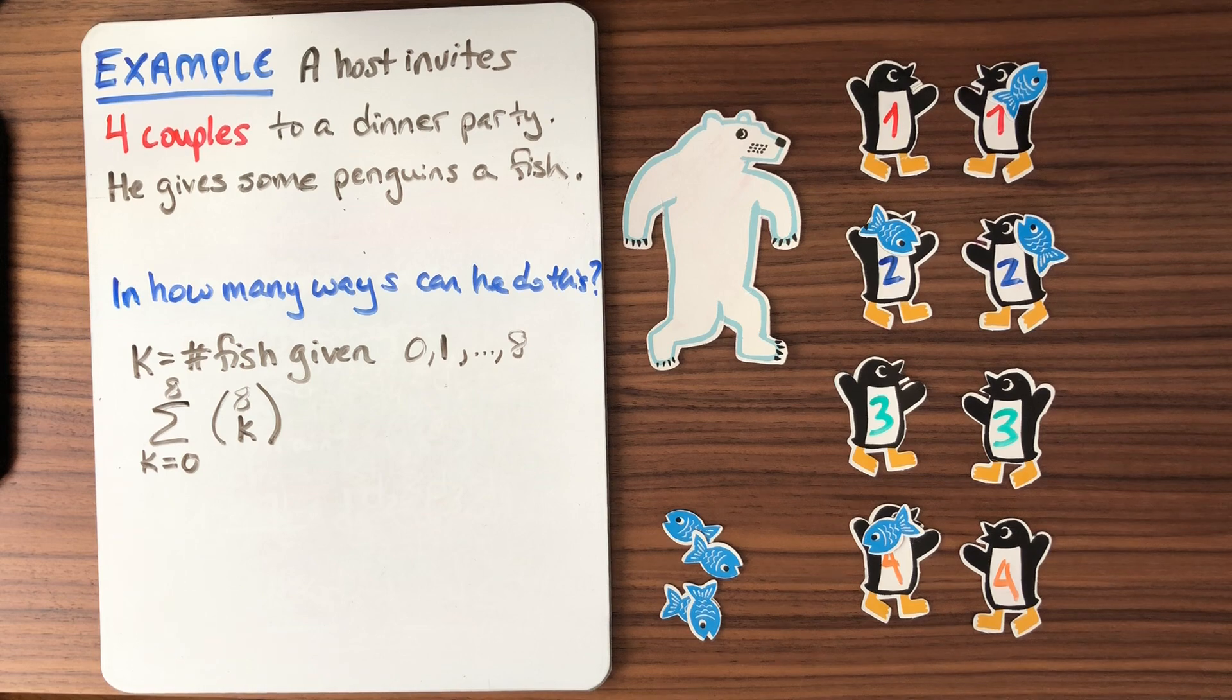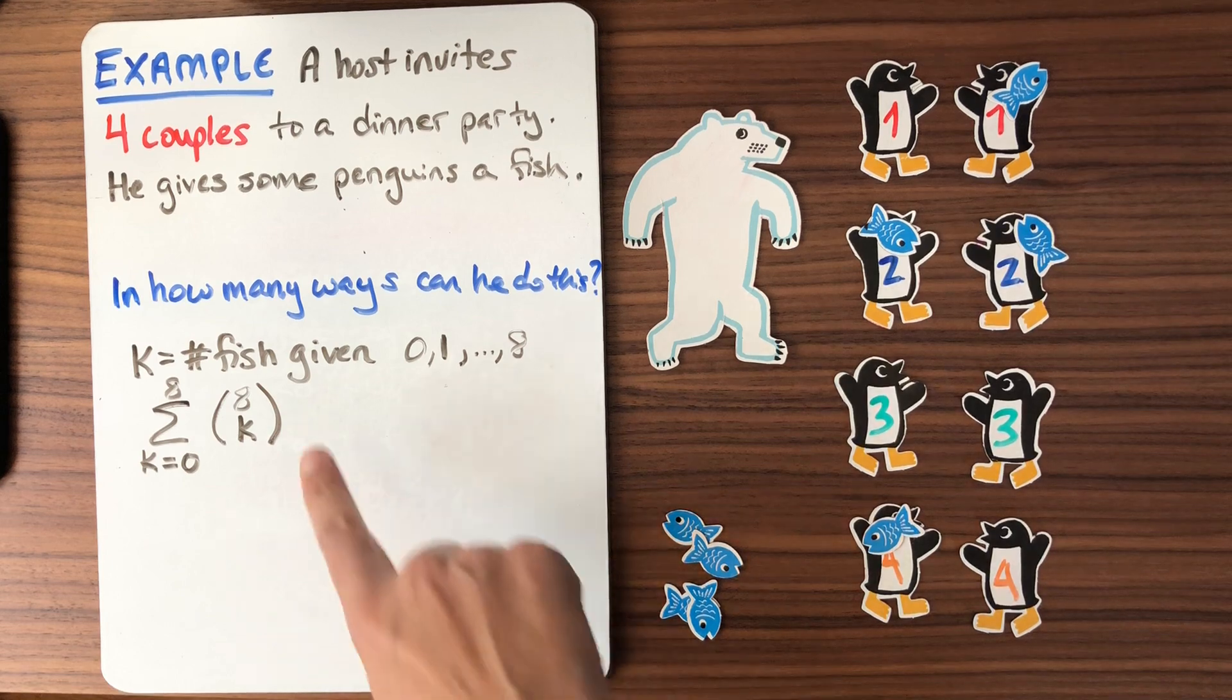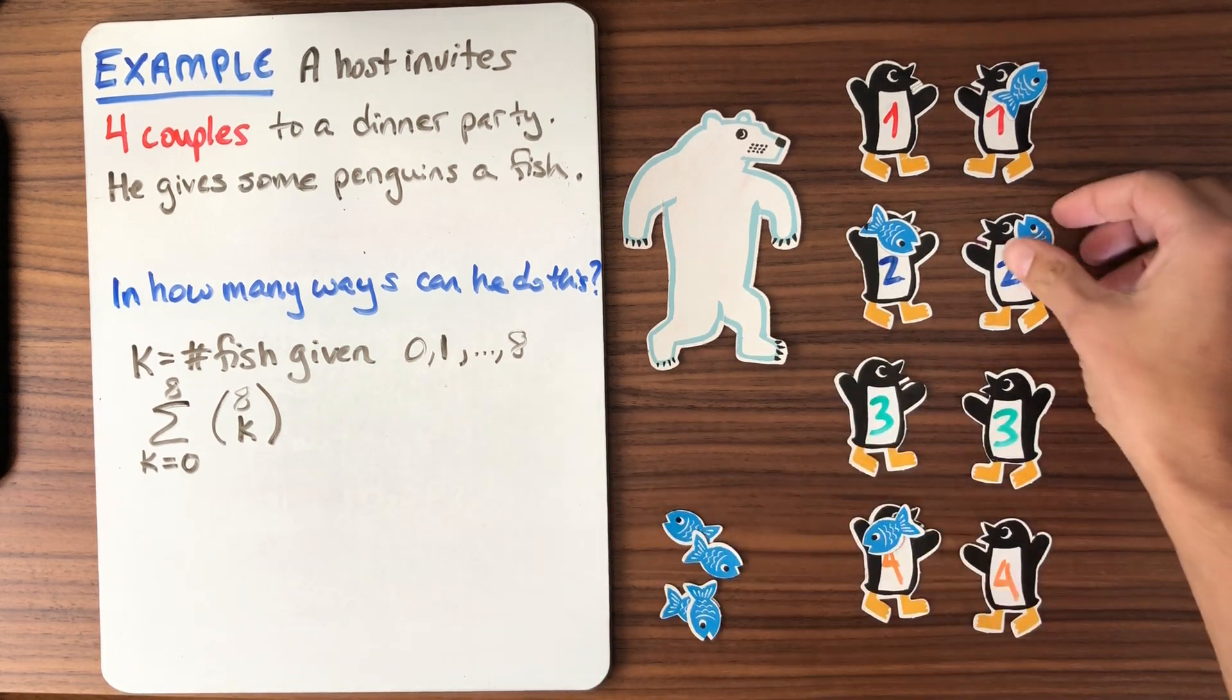But there's another way that he could have thought of this problem, right? What he could have done—so this is just sort of deciding, oh, you get a fish, you get a fish, you get a fish. Another way the polar bear could go about it. That's going to give us the same answer, but a different way to think of it.